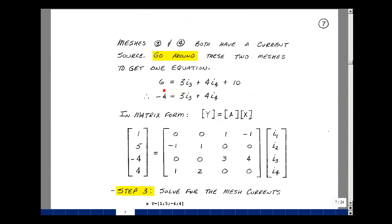I'll start at ground on the previous page. I have a rise in voltage of 6, and then a drop of 3 ohms times I3, and then a drop of 4 ohms times I4, and a drop of 10. I'm just going around that outer mesh on the left-hand side. Bring this over here. I have 3I3 plus 4I4. I have four equations and four unknowns.